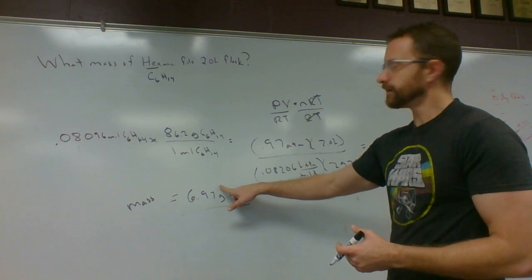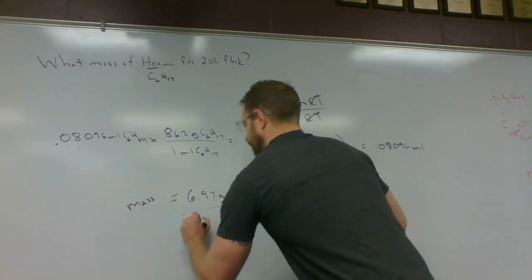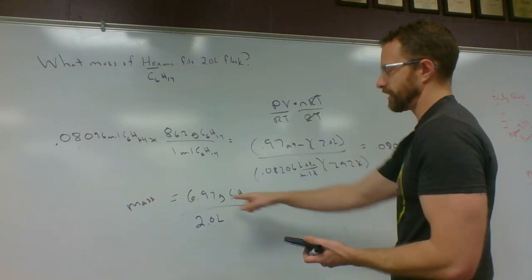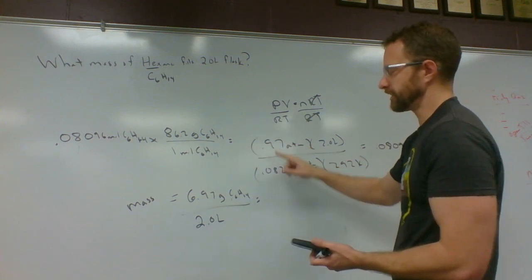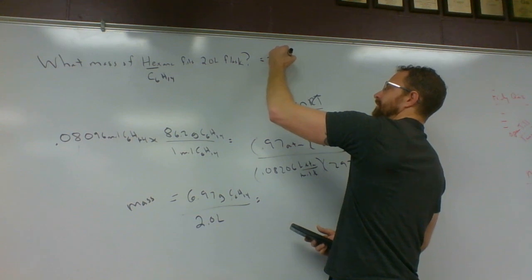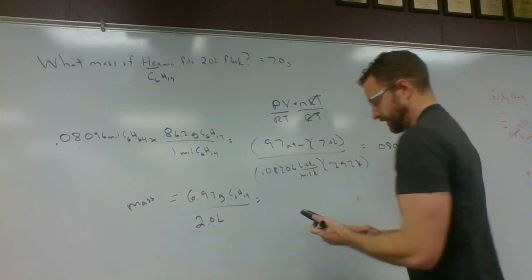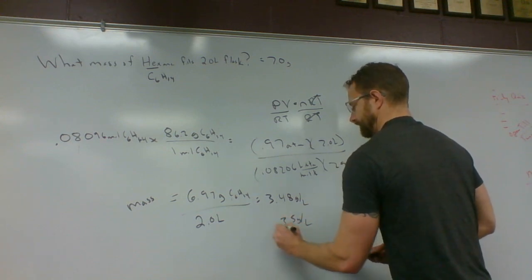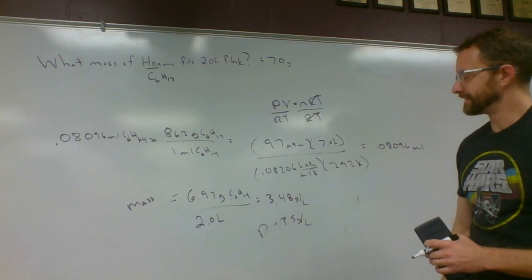But we have the mass of the gas here. We could solve for volume pretty quickly. Well, not solve for it - we know it. It's 2 liters. So all I have to do is divide this by 2.0 liters. And that would give us 6.97 - oh, you know what, I should have rounded this. I had two sig figs I should keep. So really, this should have been 7.0. The answer to this question to correct significant figures would be 7.0 grams. I can certainly use the unrounded for calculations and then round again. So 3.48 grams per liter, so 3.5 grams per liter is the density of this gas.